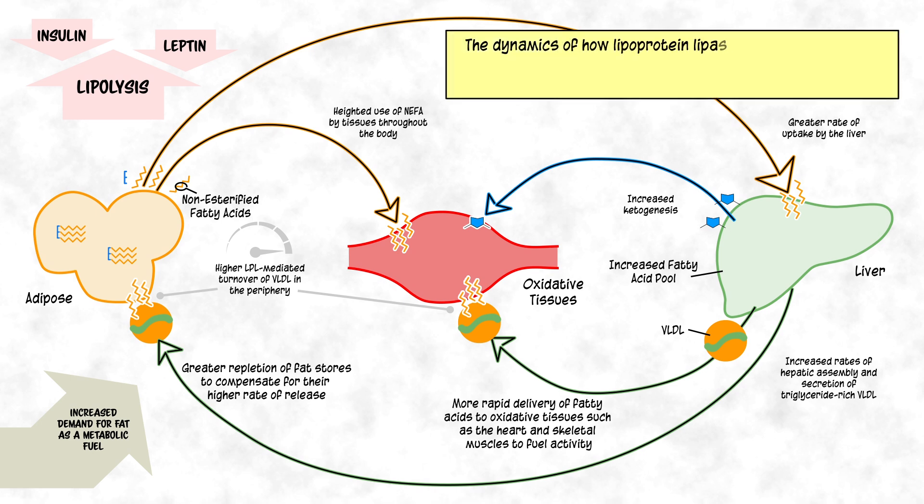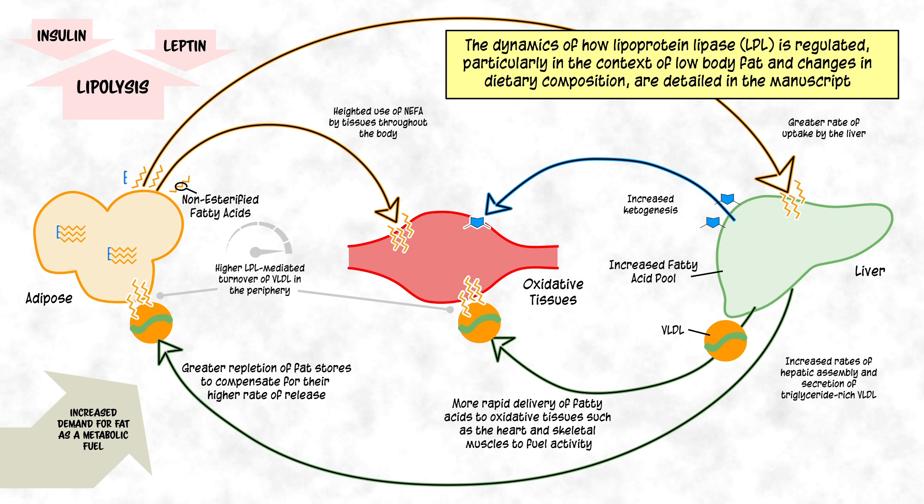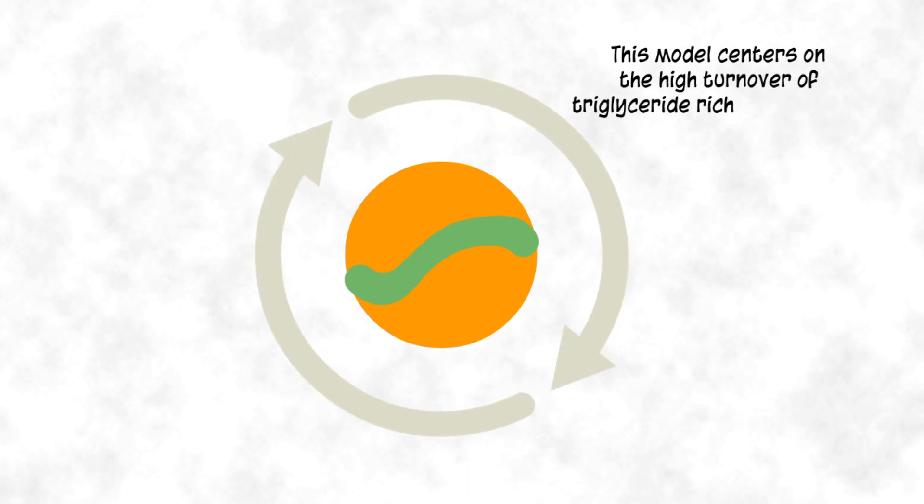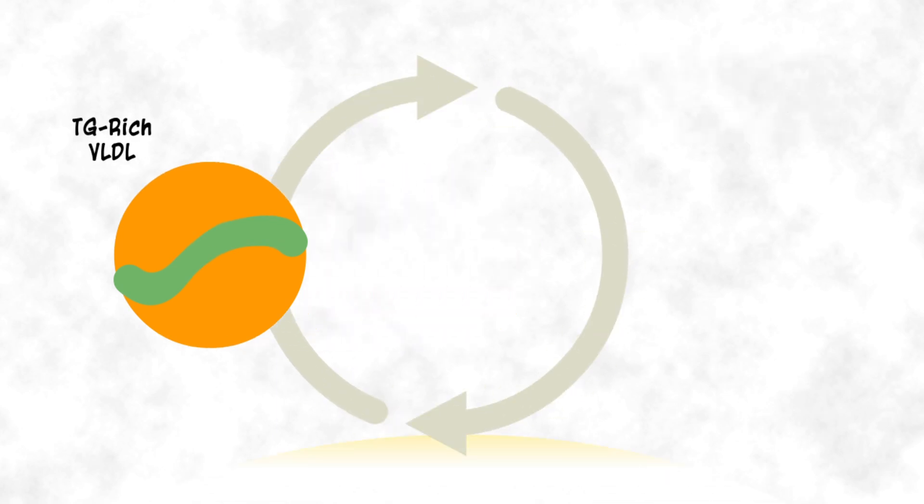The dynamics of how lipoprotein lipase is regulated, particularly in the context of low body fat and changes in dietary composition, are detailed in the manuscript. But simply stated, this model centers on the high turnover of triglyceride-rich lipoproteins, particularly VLDL. This high VLDL turnover results in three major outcomes: